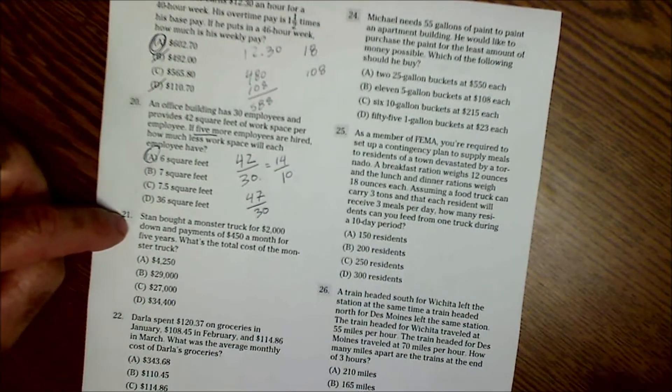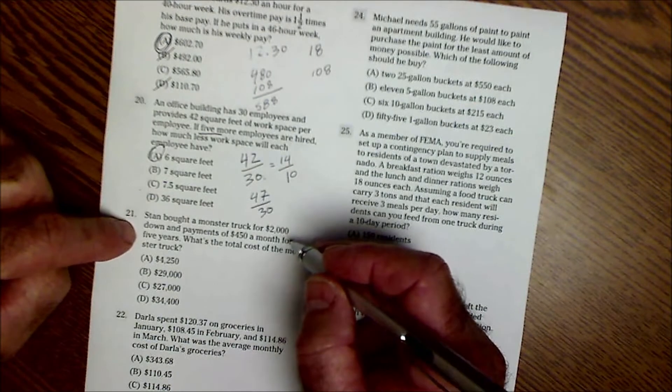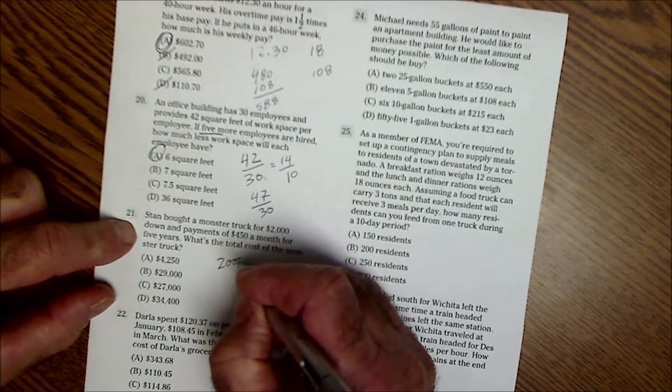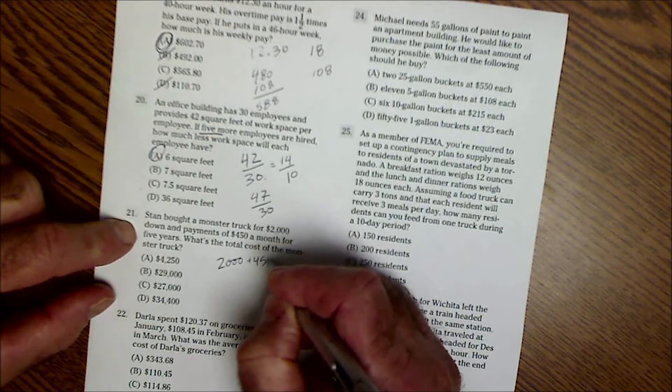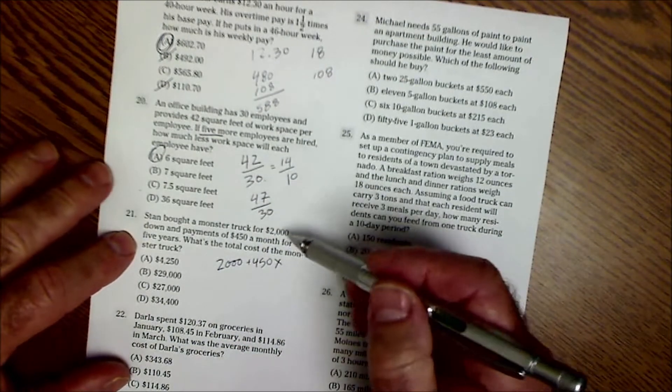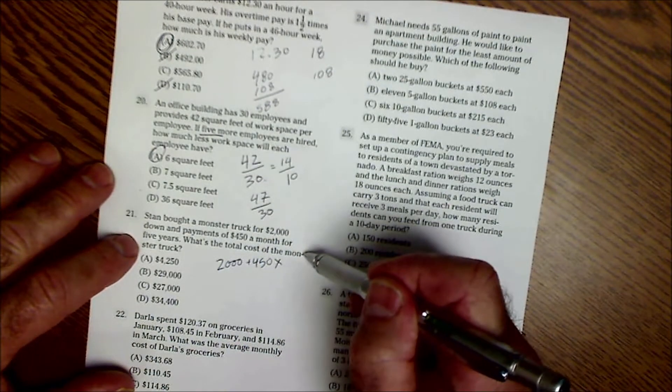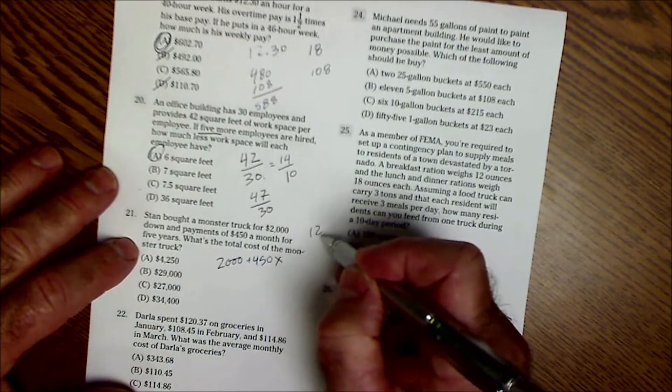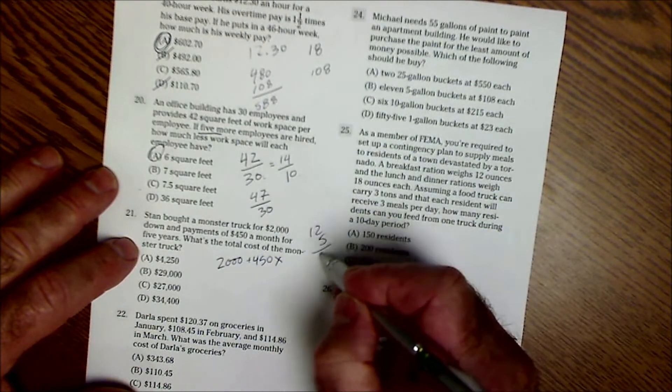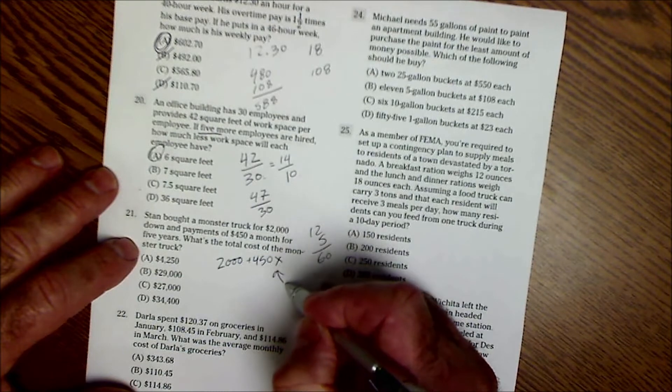Number 21, Stan bought a monster truck for $2,000 down and $450 a month. So $2,000 down plus $450 X, where X is the number of months. For 5 years, what's the total cost of the truck? 5 years, 12 times 5 is 60. We're going to take that 60 and put it in there.